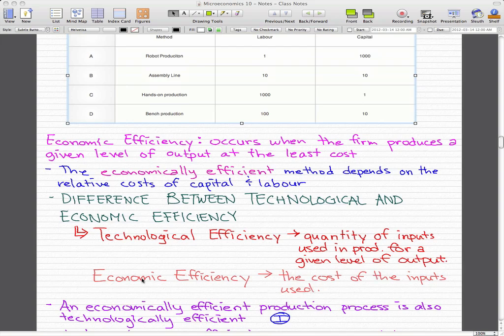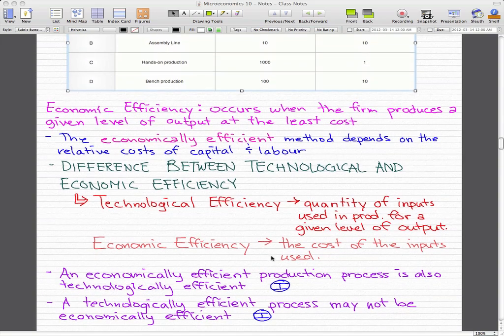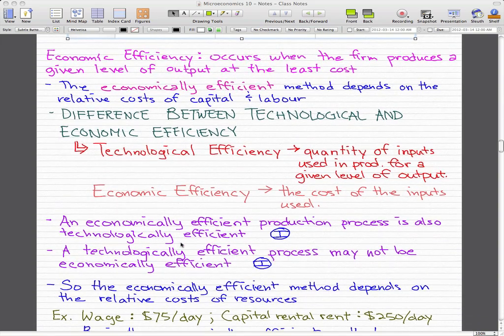So when we're talking about economics or economic efficiency, we're talking about the cost. Technological efficiency, we're talking about the quantity of inputs. And here are two really important points that you should know. An economically efficient production process is also technologically efficient. And a technologically efficient process may not be economically efficient. So yeah, just spend a little time and try to wrap your head around those two concepts.